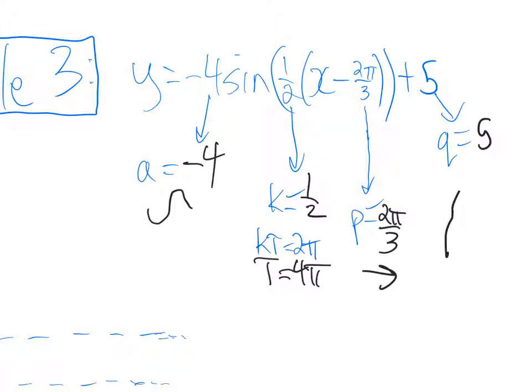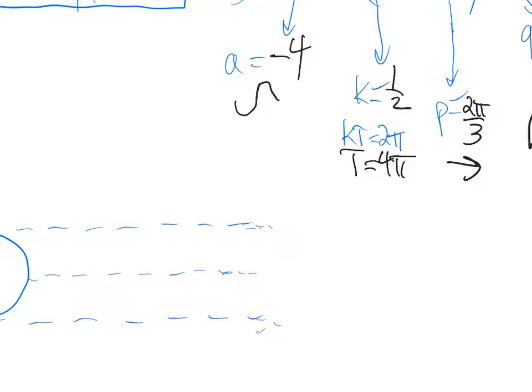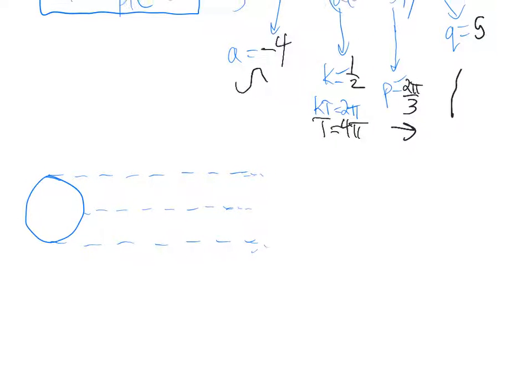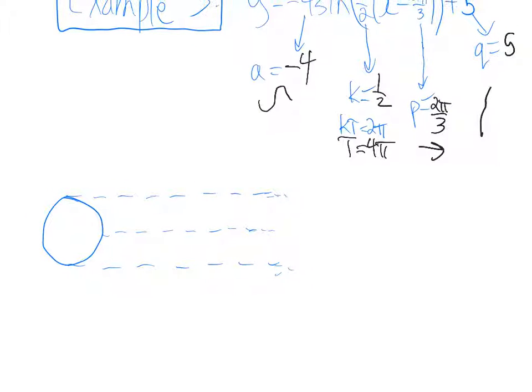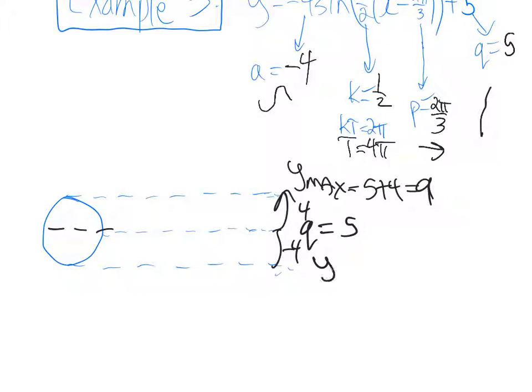So now we can take that information and we can graph it. So now we're going to graph this. And again, the middle of the circle is q, the midline, and that is at 5. The amplitude is 4, negative 4, but 4. So it goes up 4 and down 4. So the maximum y value is going to be 5 plus 4, which is 9. The minimum value is going to be 5 minus 4, which is 1. That's the y minimum. I know it's a negative sine curve, so I'll draw a negative sine curve. It's vertically reflected.